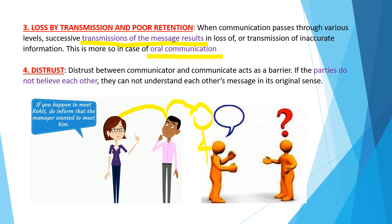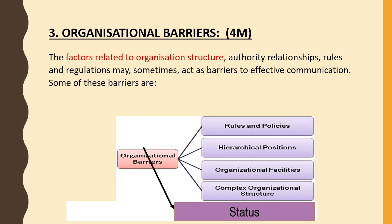Distrust: distrust between communicator and communicatee acts as a barrier when parties do not believe each other. If you feel your manager is cheating you and not giving correct information to top-level management, or that he shows partiality toward employees of his own caste or religion, you would not trust him with important personal information. This lack of basic trust results in a psychological barrier in the organization.